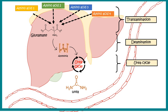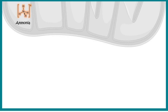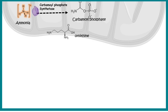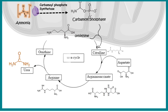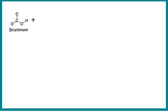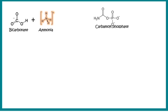The first process is transamination, followed by deamination from glutamate to form ammonia, and then the urea cycle by which urea is excreted. The first step of the urea cycle is conversion of ammonia into carbamoyl phosphate, then ornithine is converted to citrulline through several intermediates, and ultimately urea is generated from arginine. The first step is the rate-limiting step of the entire pathway.